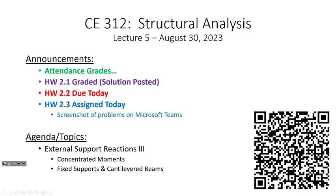I don't see any systemic issues other than a few of you may have the SI version of the textbook. I sent an email to those students this morning while I was grading. It didn't affect homework 2.2 since those were custom problems, but for homework 2.3, if you check Microsoft Teams, both problems on this next homework assignment come from page 92, and I snapped that page and put it on the Teams channel. So if you check there, you can find those problems — due Monday.